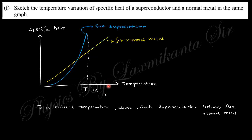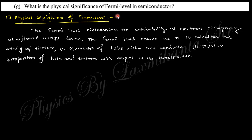Next question says: what is the physical significance of Fermi level in semiconductor? Actually, in the semiconductor, Fermi level says the probability of occupation of the electron at different energy levels. That's the main importance of the Fermi level. From this Fermi level, you can obtain the density of electron, number of holes within the semiconductor, relative proportion of hole and electron with the temperature, etc., will be obtained from this Fermi level in semiconductor. You can see at the zero kelvin temperature, this valence band are totally occupied, conduction one is zero.